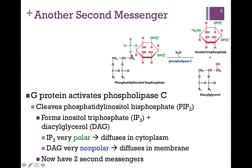So it's going to cut the bond right here, and that clips this phospholipid into two molecules. On the top we have inositol trisphosphate — there are three phosphate groups here in green. And on the bottom of our figure, we have diacylglycerol.